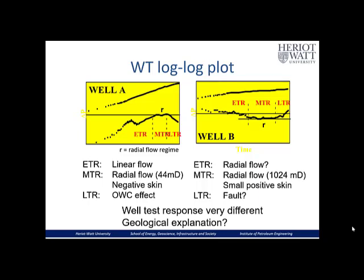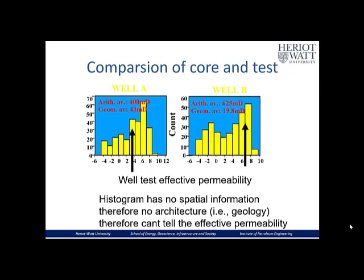The well test responses are so different that it requires a geological explanation. When comparing core and test, it's useful to go back to the histograms and plot where the well test effective permeability falls on the core plug histograms. In well B, with more than 1000 millidarcies, the permeability points toward the higher mode in the bimodal distribution — it appears to come from the high permeability intervals. In well A, the well test permeability at 44 millidarcies is close to the geometric average, indicating a combination of high and low permeability. Importantly, histograms don't carry spatial or clustering information, so you can't determine effective permeability from histograms alone.